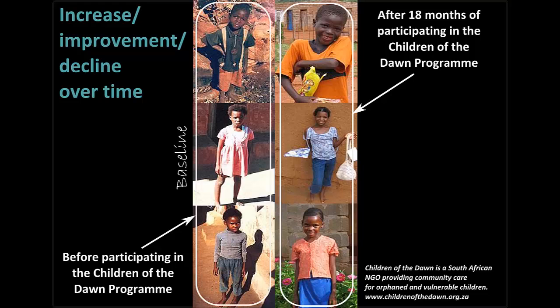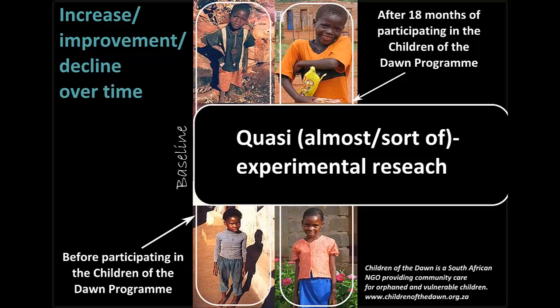Next on the list of what we try to measure with monitoring and evaluation is increase, improvement, or decline over time — change, basically. If your outcomes speak about an increase, improvement, or decline, you will need to compare your indicator at at least two different instances over time. This means your measurement will entail some kind of pre- and post-testing or knowledge about the baseline conditions. We call this process of comparing over time quasi-experimental research. Quasi means almost like, so it is sort of experimental research.